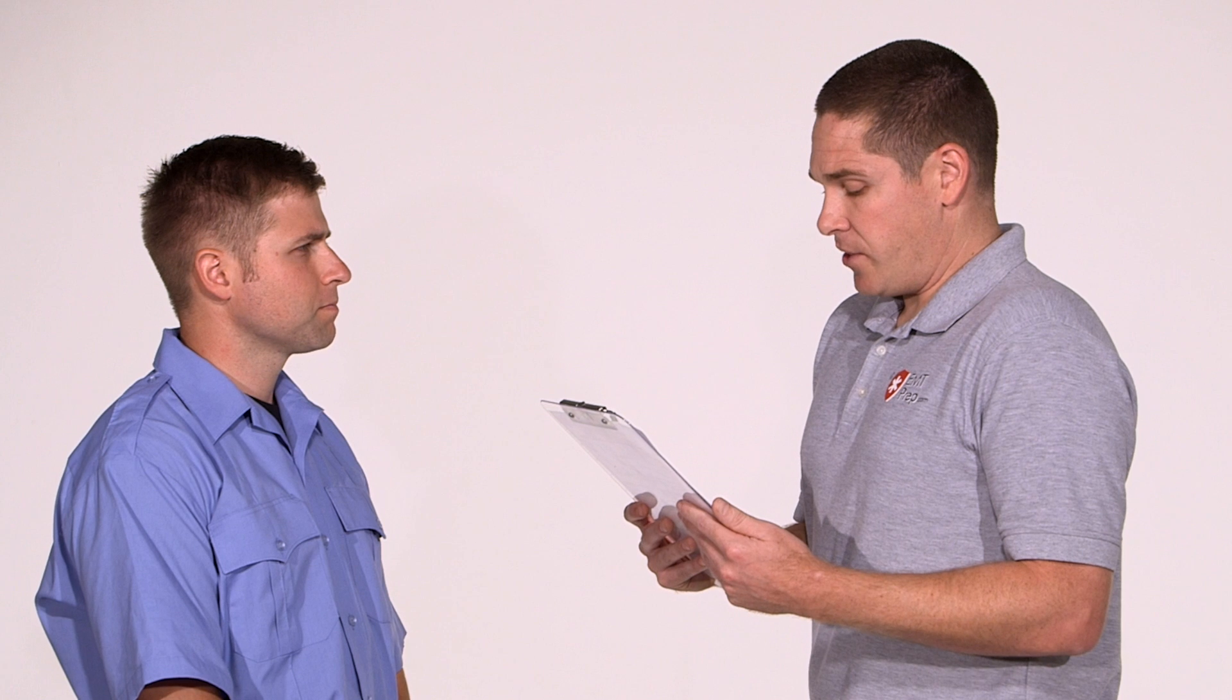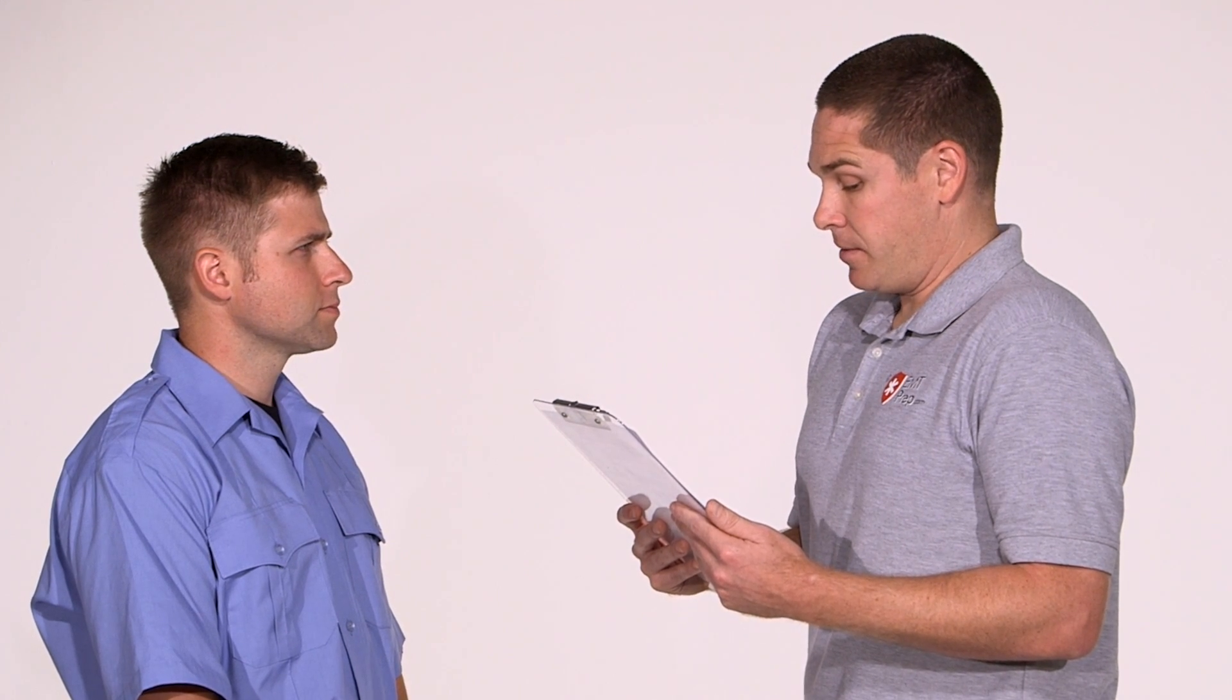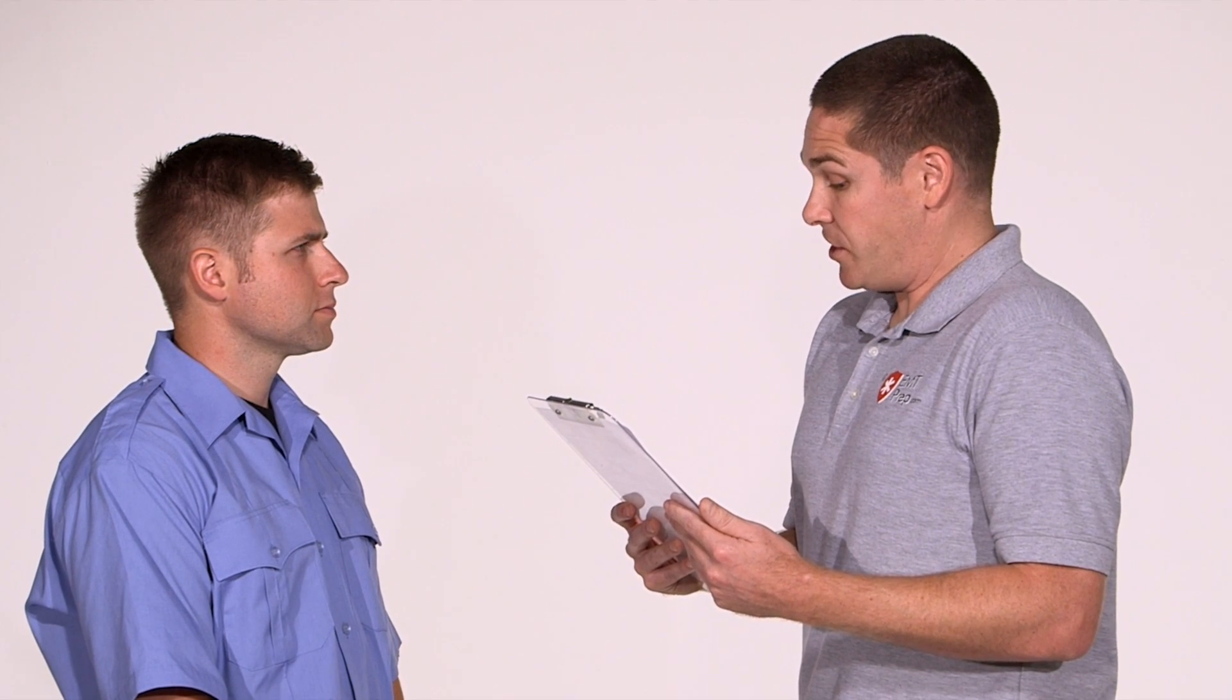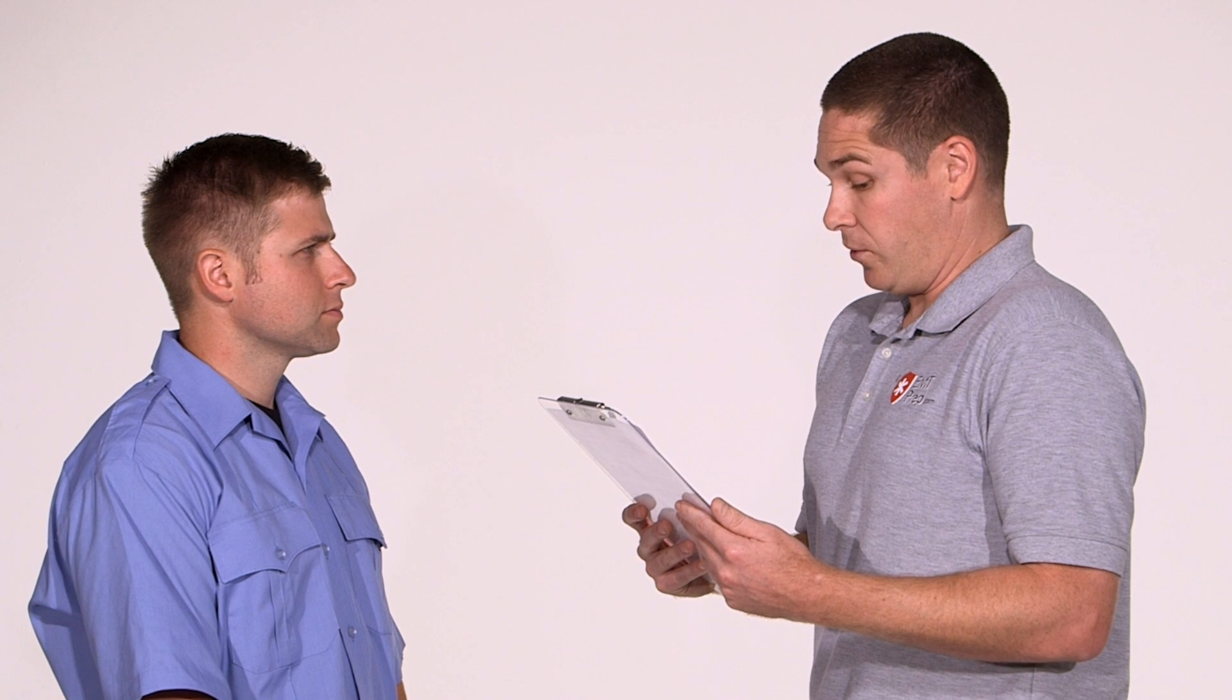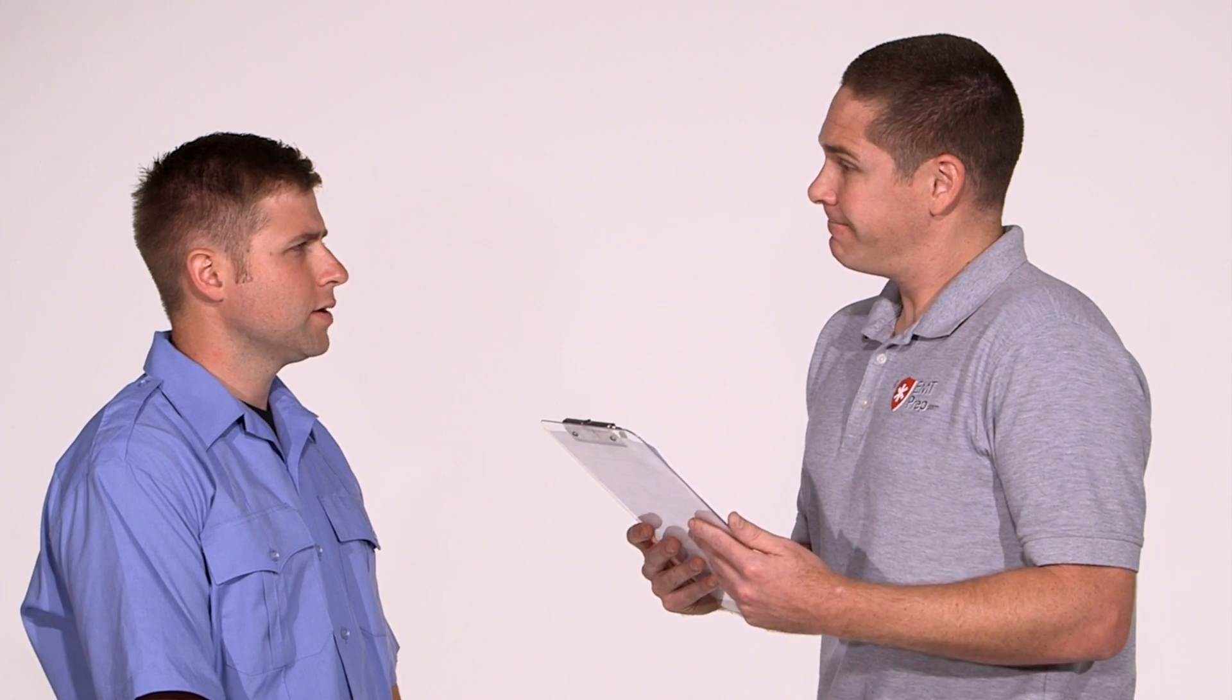The patient you are treating is a 62-year-old hypoglycemic patient. His initial blood sugar is 32 and offline medical control indicates you should administer a bolus of D50. Do you have any questions? I do not.